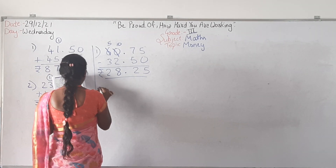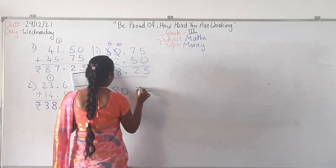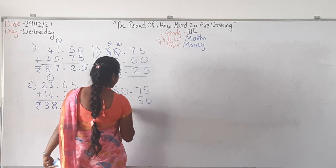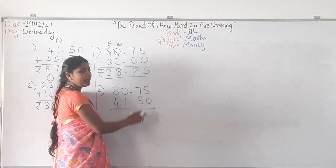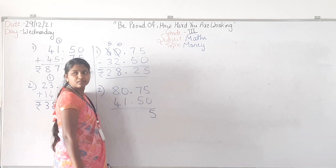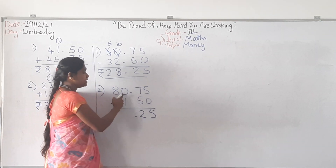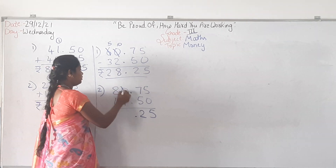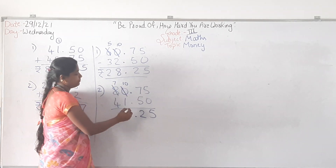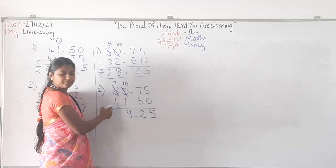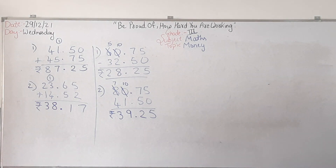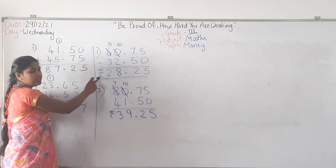One more subtraction problem. 80.75 minus 41.50. What is 5 minus 0? 5. 7 minus 5 is 2. 0 minus 1 — can you do? No. This will become 10 and this will be reduced to 7. What is 10 minus 1? 9. 7 minus 4 is 3. But you have to not miss the point and the currency.